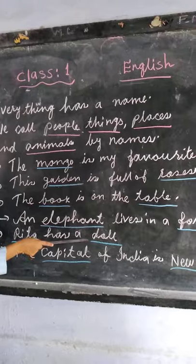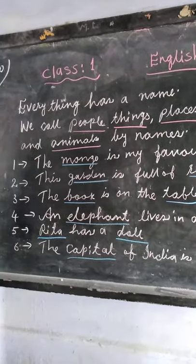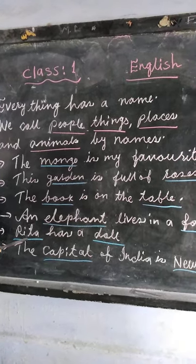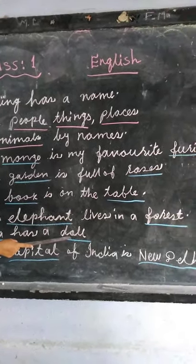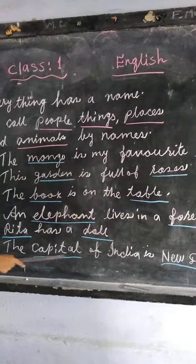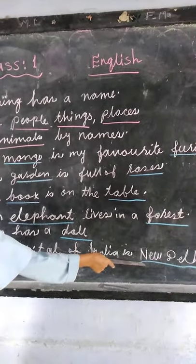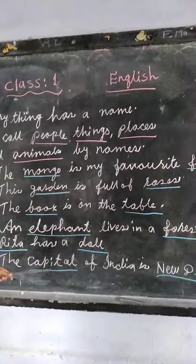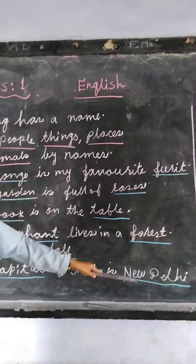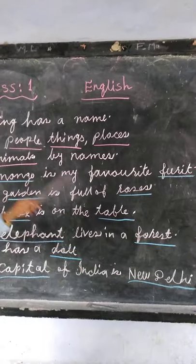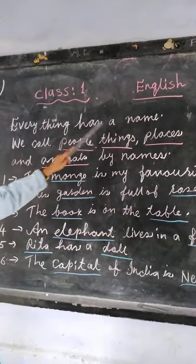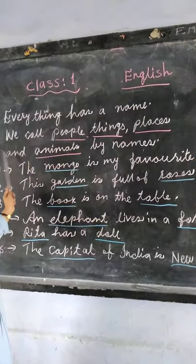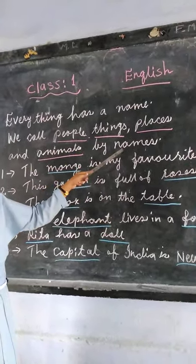Number 5: Rita has a doll. Rita is the name of a girl. Doll is the name of a thing. Number 6: The capital of India is New Delhi. India, capital, and New Delhi are all naming words. See once again — everything has a name. We call people, things, places, and animals by names.